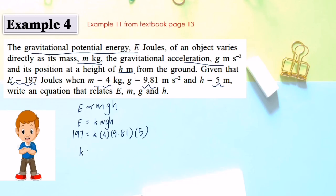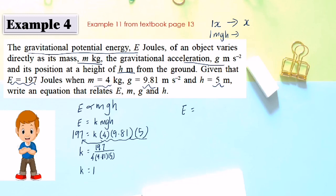Substituting the given values: 197 equals K times 4 times 9.81 times 5. Bringing the product to the other side by division: K equals 197 over (4 times 9.81 times 5), which gives K equals 1. Since K is 1, we write the complete equation as E equals MGH.